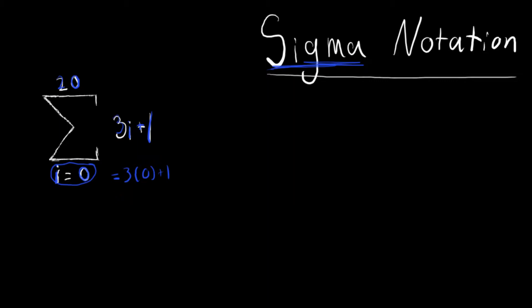So let's get rid of all of that, and go back to this 20 at the top. What this is saying, these two are directly related to each other. This is saying i goes from 0 all the way up until 20, and hits every whole number integer in between.